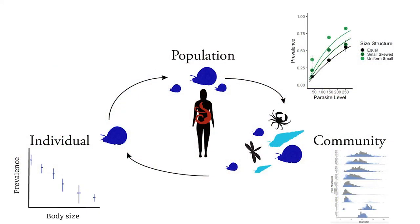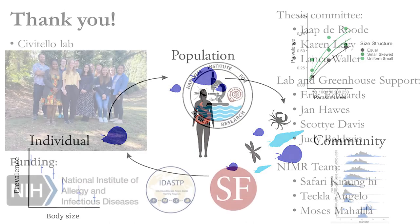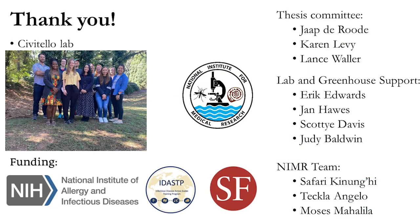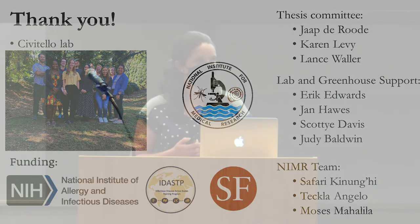To wrap up: we talked about how changes in exposure and susceptibility at the individual level can influence a snail's chance of being infected, how that plays out to population-level transmission dynamics, and finally how community interactions can shape these things and feed back on that individual host trait. Thank you to everyone in the lab, our collaborators in Tanzania at the National Institute for Medical Research, and all the undergraduates who contributed to this work. I'll take questions.